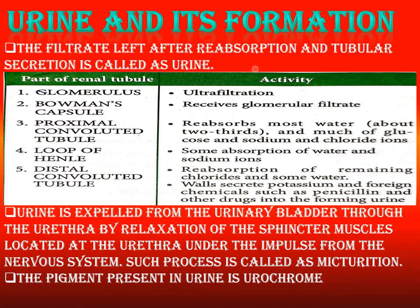A summary of kidney activity: ultrafiltration takes place in the glomerulus; the Bowman's capsule receives the glomerular filtrate. The proximal convoluted tubule reabsorbs water, glucose, sodium, and chloride ions. The loop of Henle achieves maximum water absorption. The distal convoluted tubule absorbs remaining chlorides, some water, and secretes potassium and foreign chemicals such as penicillin and other drugs into the forming urine. Urine is expelled from the urinary bladder through the urethra by relaxation of the sphincter muscles, under the control of the nervous system.